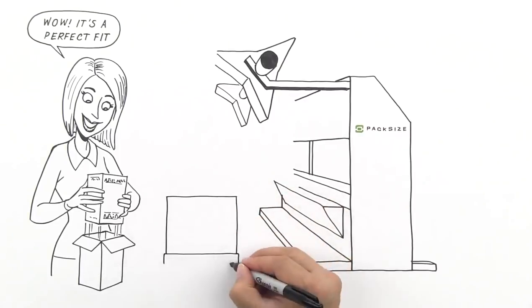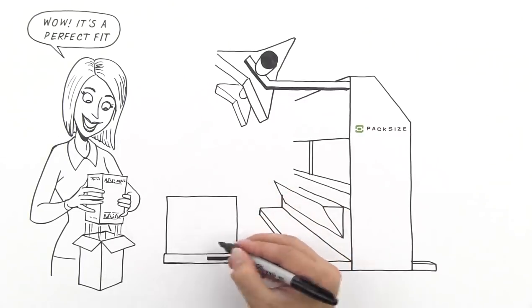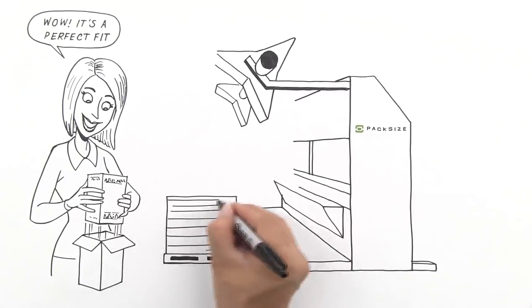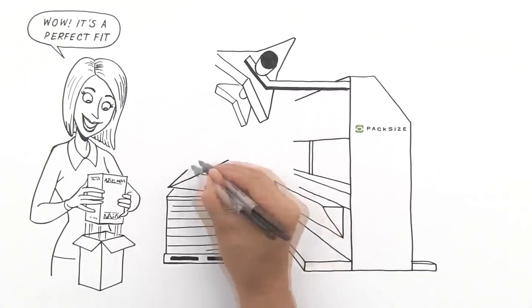It works by placing a small box-making machine and corrugated material, or what you and I call cardboard, on the company's packaging line.